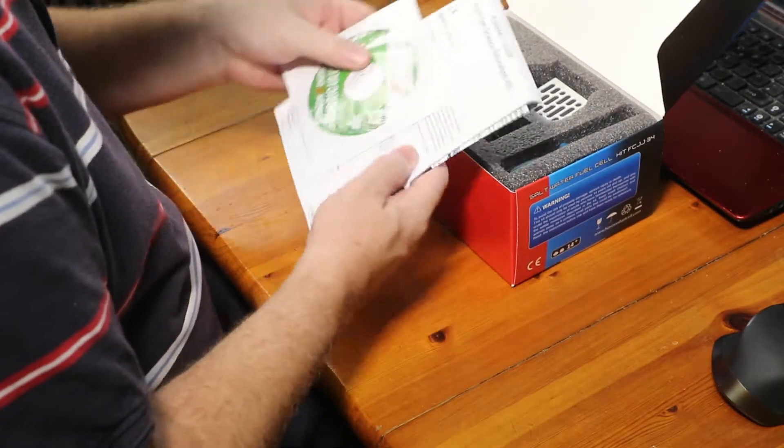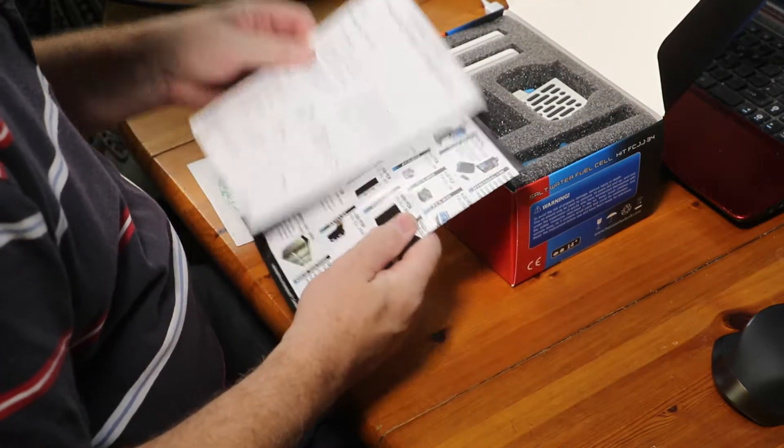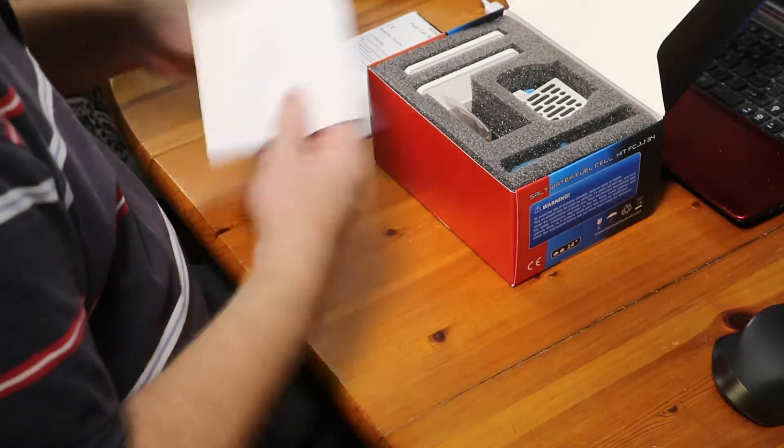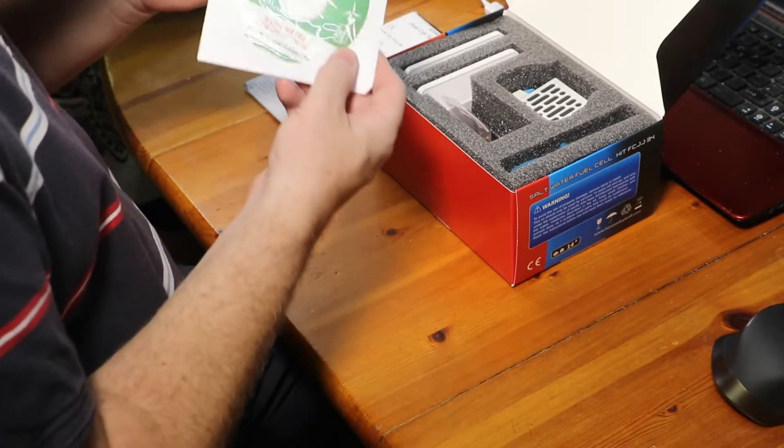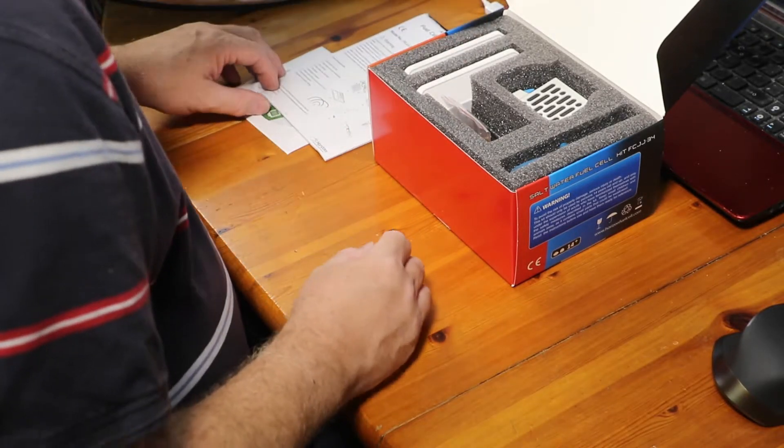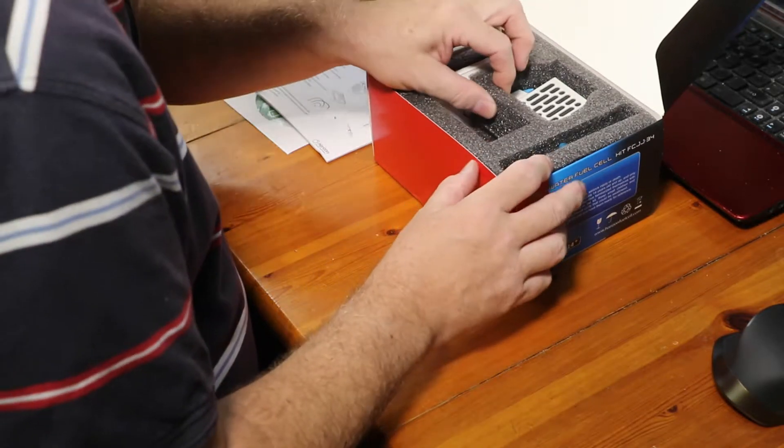So we have an assembly guide, a list of products, a CD with all the different programs on. And then inside, let's see what we've got.